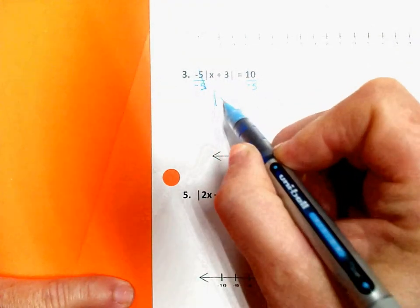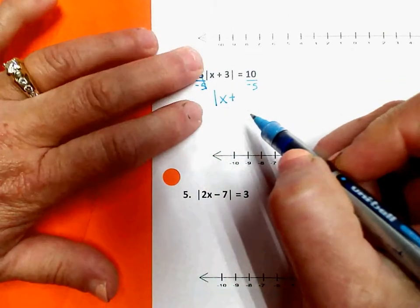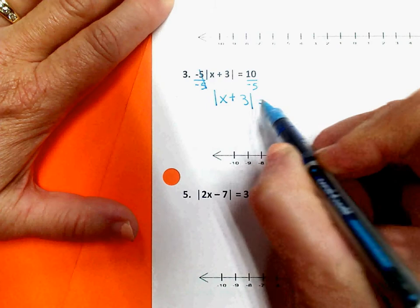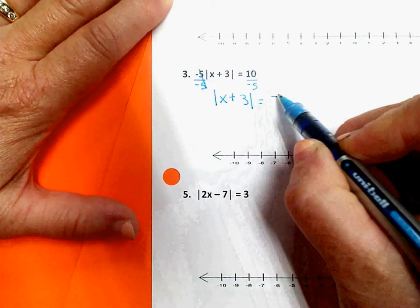Now my absolute value bars are by themselves. I have my x plus 3. And over here, 10 divided by negative 5 is negative 2.